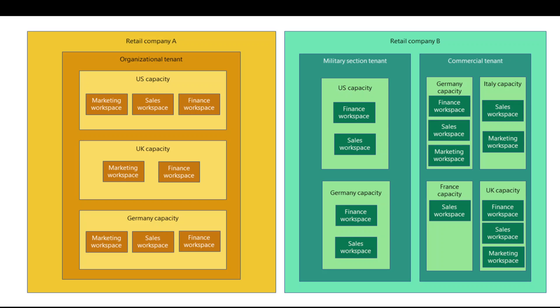Usually what happens is that compute is equivalent to capacity in Fabric. So all your compute is called capacity. You have to remember this specific term — capacity is nothing but the compute cost that is associated.